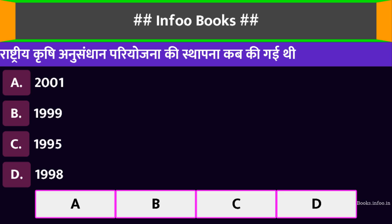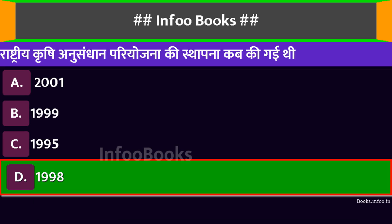राष्ट्रीय कृषि अनुसंधान परियोजना की स्थापना कब की गई थी? Option A: 2001। Option B: 1999। Option C: 1995। Option D: 1998। सही विकल्प है: 1998।